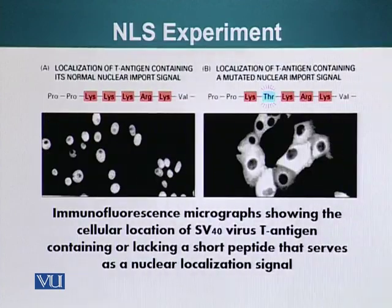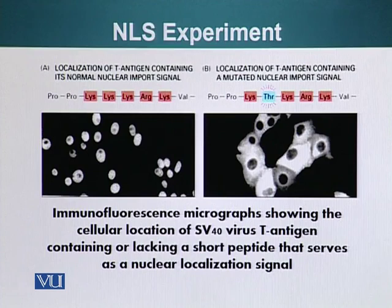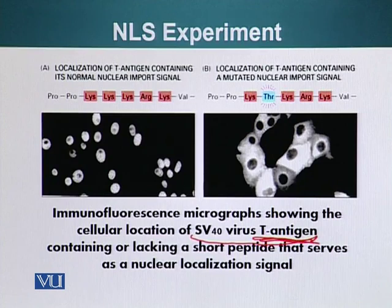Here it is. What we have done is an immunofluorescence experiment — these are micrograph images showing the cellular location of SV40 T virus antigen. This virus has a T antigen, and we have two versions of this antigen.